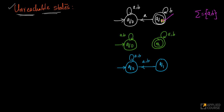q1 is an unreachable state because you start at q0, and if you get a or b as input, you continue to stay in q0, which means you'll never reach q1. In another example, you start at q0, and even with edges present, this whole state is useless because you'll never reach it.